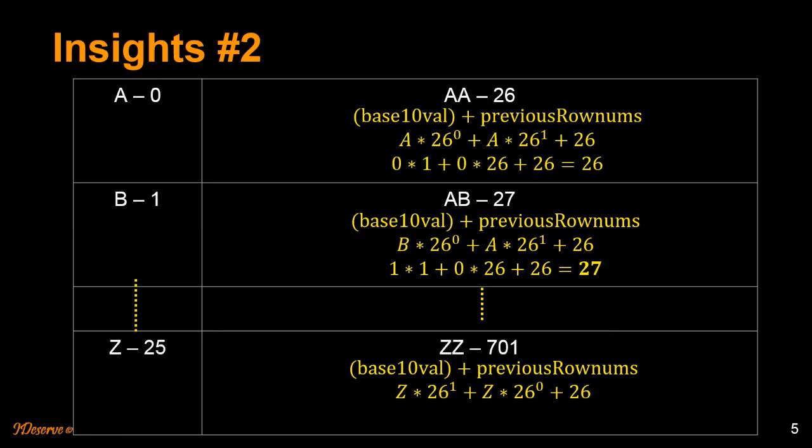First, calculate the base 10 value. Z into 26 power 1 plus Z into 26 power 0 plus the previous row numbers. So what is the value of Z? Z's value is 25. And 25 into 26 plus 25 into 1 plus 26.